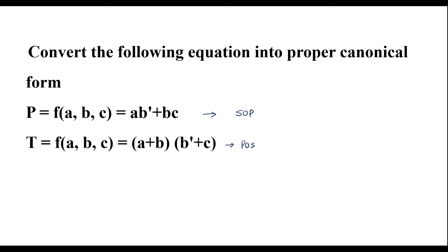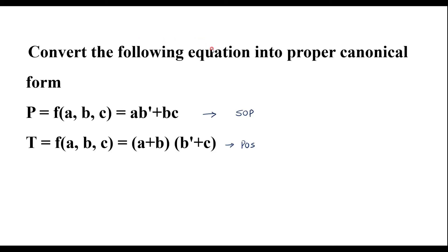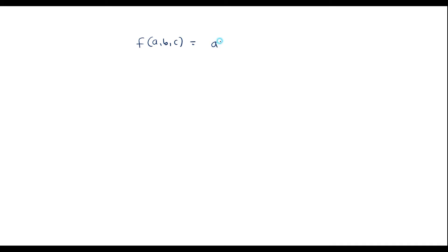Let me take the SOP equation: f(a,b,c) = a·b' + b·c. In standard SOP form, each minterm consists of all literals. Here we have three variables, so we can observe that variable c is missing from the first term and variable a is missing from the second term. We will try to add those missing variables.